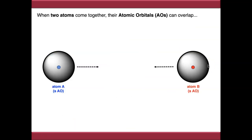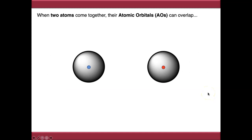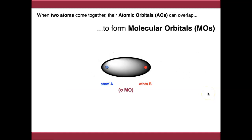In the previous video we were just dealing with atomic orbitals - the orbitals on an individual atom. Now we're going to form molecular orbitals. We're going to bring multiple atoms together and overlap their orbitals with each other to form new orbitals. So if we bring two atoms together that both just have an s orbital for simplicity, their orbitals can overlap and mix together to form molecular orbitals.